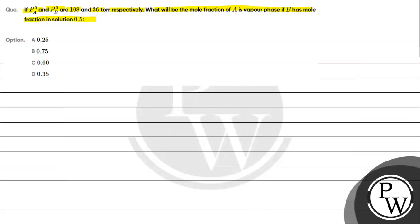Option A is 0.25, option B is 0.75, option C is 0.6, option D is 0.35. The key concept for this question is Raoult's law.